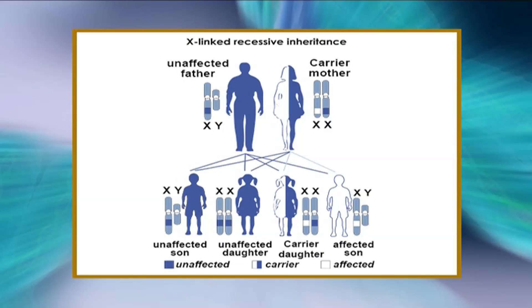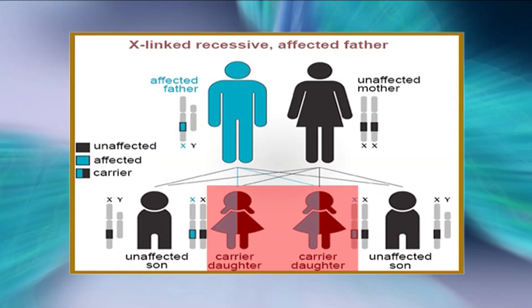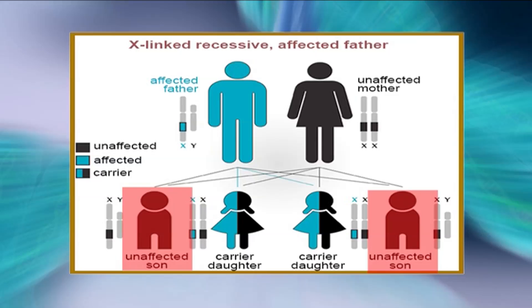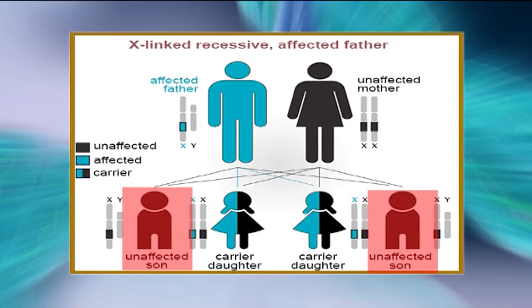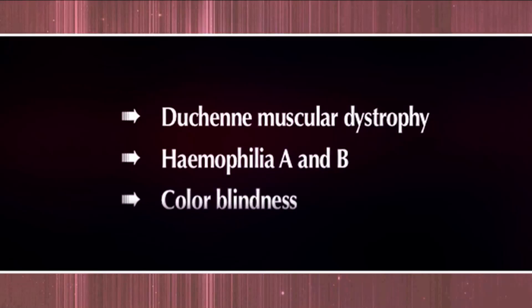All males possessing an X-linked recessive mutation will be affected since males have only a single X chromosome and therefore only one copy of X-linked genes. All offspring of a carrier female have a 50% chance of inheriting the mutation if the father does not carry the recessive allele. All female children of an affected father will be carriers, assuming the mother is not affected or a carrier. No male children of an affected father will be affected, as males only inherit their father's Y chromosome. Common examples of X-linked recessive inheritance are Duchenne muscular dystrophy, hemophilia A and B, color blindness, and many others.